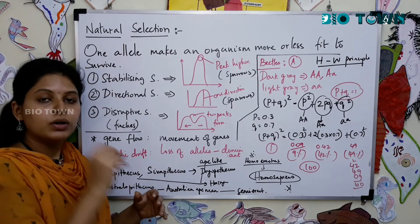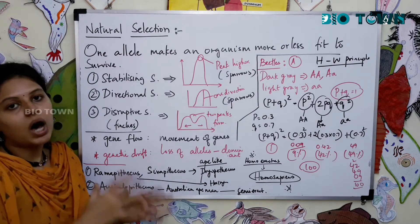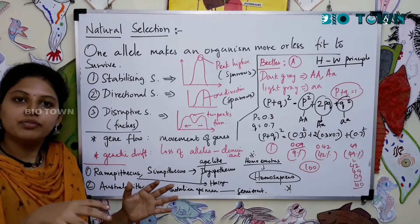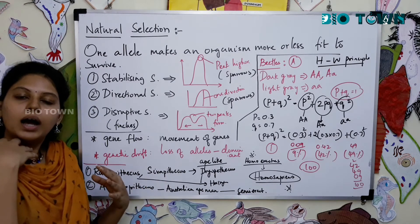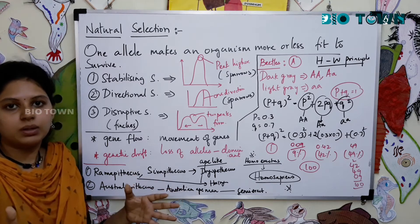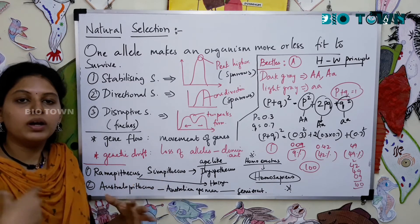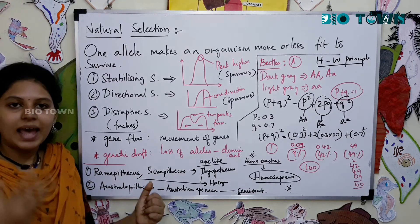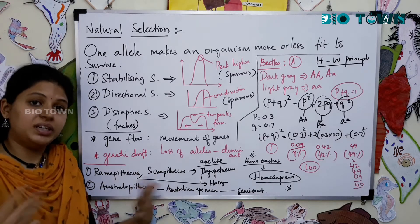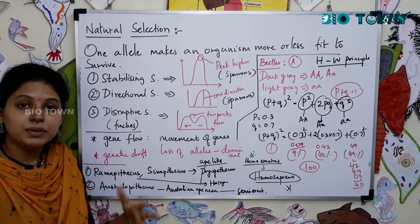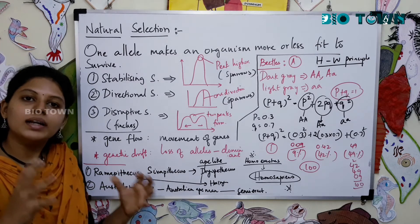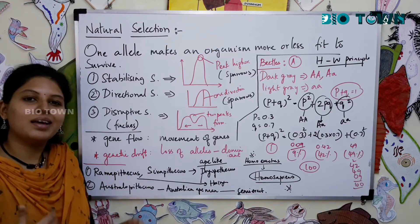Then next we will talk about Hardy-Weinberg principle. Hardy and Weinberg were two different individuals. Now there are n number of organisms throughout the planet—it could be the pathogens of human body, microbes, different plants, animals, different types of animals, different species. So what exactly is happening? There is always an evolution, there is always a variation happening.